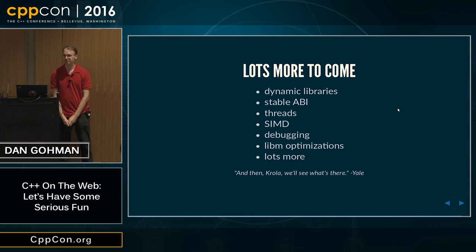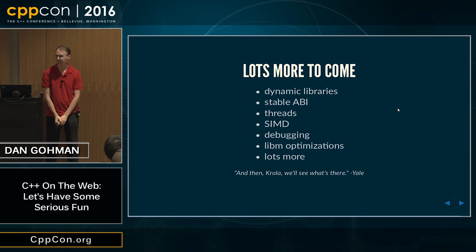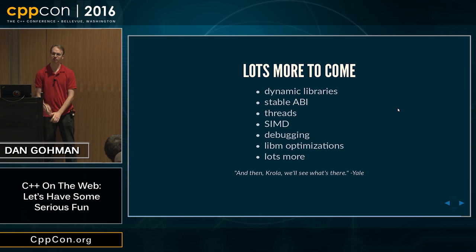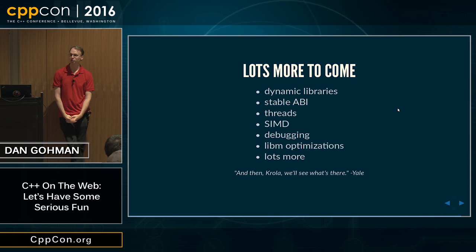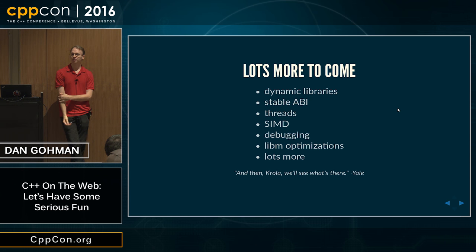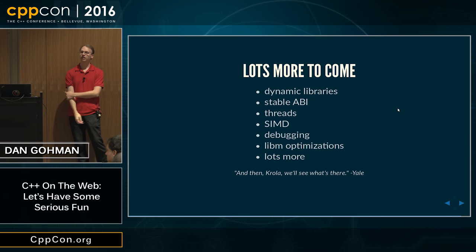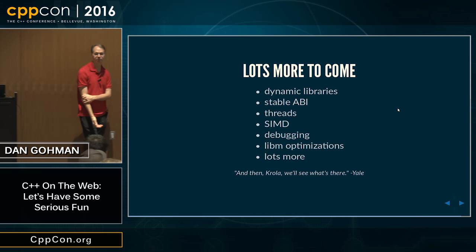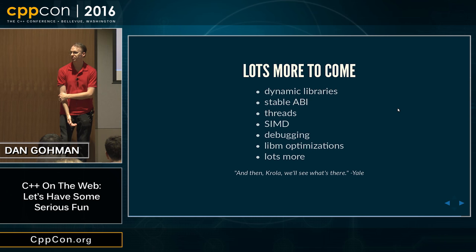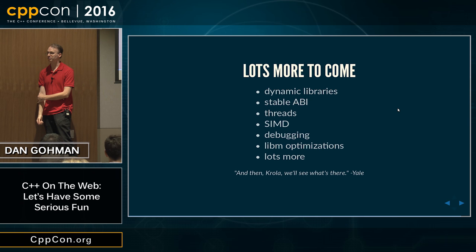WebAssembly — the design is basically done for the MVP, which is a very limited release but has all the browser vendors participating. There's lots more to come. Dynamic libraries are going to significantly improve download times and allow applications to be split up and updated in a more fine-grained way, which requires a stable ABI. Threads with shared memory will be a very critical feature for performance. SIMD, debugging features, and L10N localizations — there's just tons of stuff we want to do to make WebAssembly an awesome C++ platform.